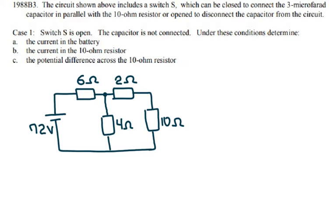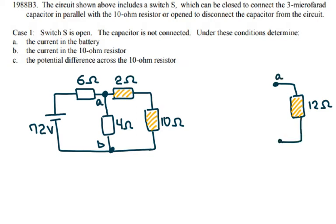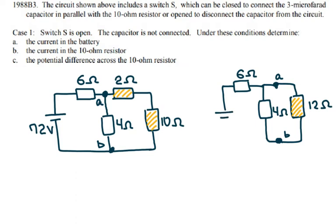Calling the two junction points A and B, I see there are two resistors connected in series. I'll replace those two resistors with one equivalent resistor. Because they are connected in series, I calculate their total resistance by adding: the total resistance of these two is 12 ohms. There is also a 4 ohm resistor, a 6 ohm resistor, and a battery of 72 volts.